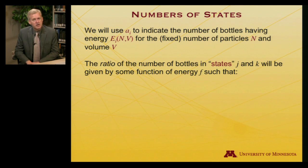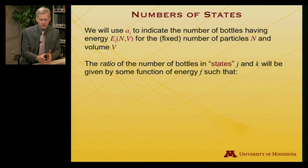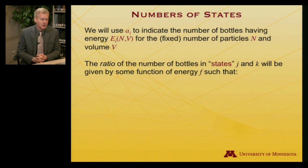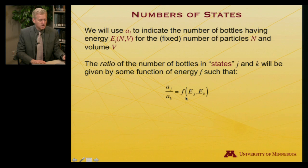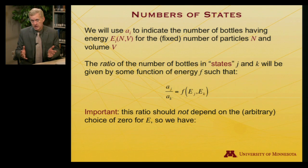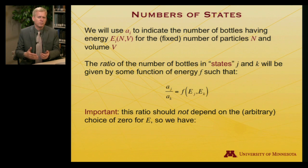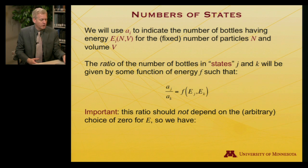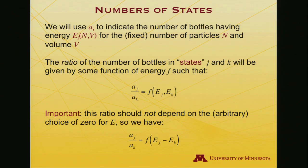Let me think about two different energies. I'd like to know the ratio of the number of bottles in state j versus state k: A_j over A_k is some function of E_j and E_k. It seems clear this shouldn't depend on where I set my arbitrary zero of energy. Instead, what ought to be true is that it depends on the difference in energy, which is independent of how I assign zero because it drops out when I take the difference.